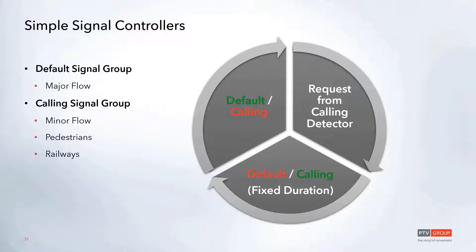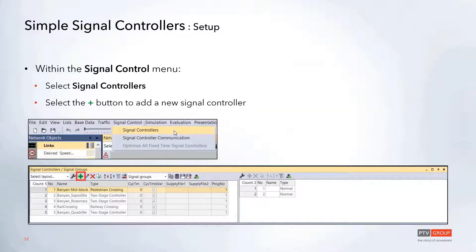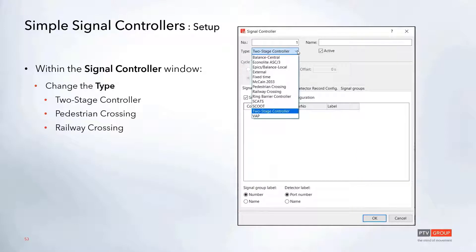All of these can be added within the signal control menu. Select 'Signal Controllers,' then select the plus button. In there you can change the type of controller — either the two-stage, pedestrian, or railway crossing.